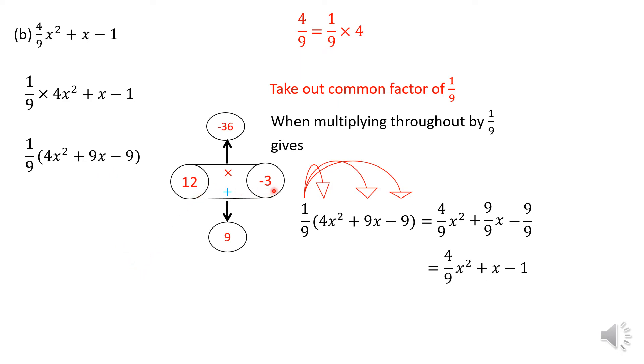And when you add those very numbers they should give you positive 9. So the factors I am looking for is 12 and negative 3. And since this is a minus sign in front of the constant it gives the idea or the rule that one number you are looking for should be positive and the other number should be negative.